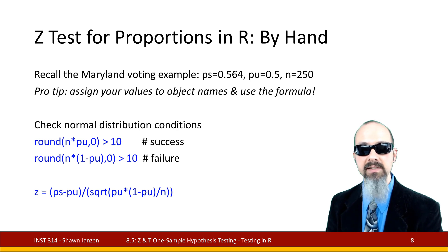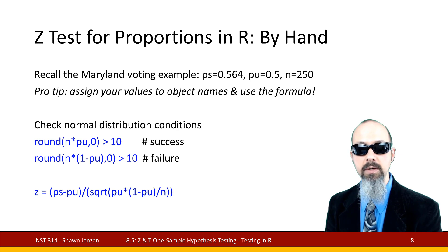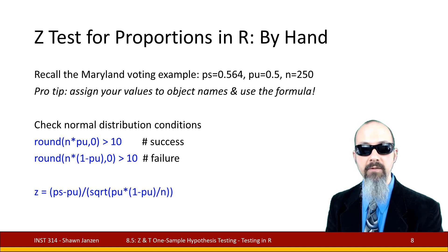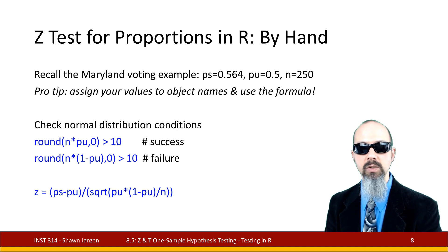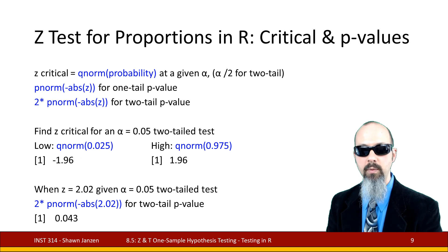In this case, we want to find the successes. I'm doing round n times p sub u comma 0 so I can round to the whole number, and then I'm going to say greater than 10. If it says true, then I'm good. Then I'm going to do round n times 1 minus p sub u comma 0, greater than 10 for failures, and it's going to say that we're true, we're also good there. And when I want to get a z-score, I can do a by-hand approach where I take each of these values and I do ps minus pu in parentheses for my numerator divided by, and in my denominator, open parentheses, square root of pu times 1 minus pu divided by n.